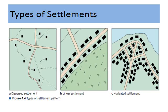When we talk about settlement patterns on the top of sheet, there are three main types: one is the dispersed settlement, the second is the linear settlement, and the third is the nucleated settlement. In the following slides we will discuss all three types in detail.